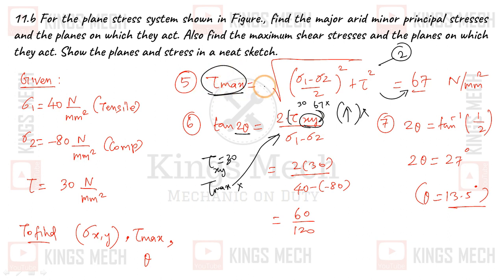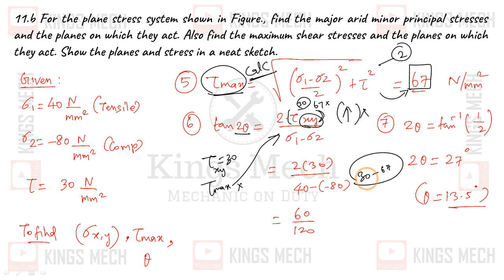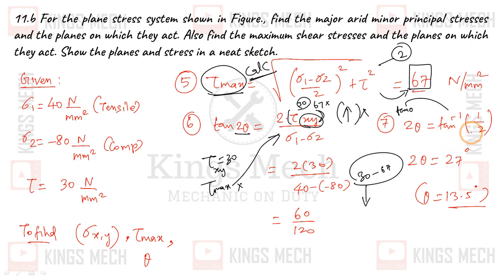This tau max is based on calculation. The limit we found is 67. To find the principal plane angle: 2 theta equals 2 times 30 divided by (40 minus of minus 80), which is 60 divided by 120, equals 1/2. So tan inverse of 1/2 gives 27 degrees, and theta equals 13.5 degrees.